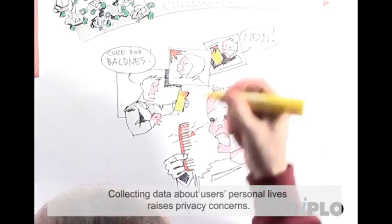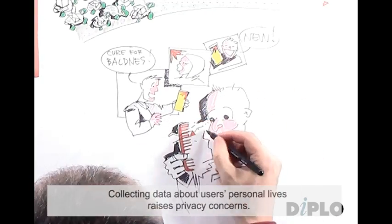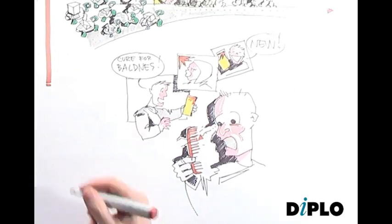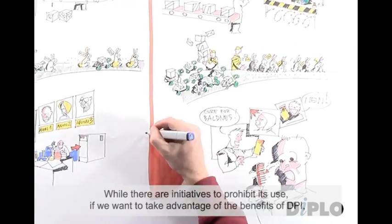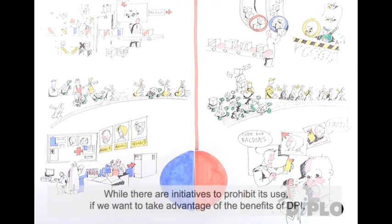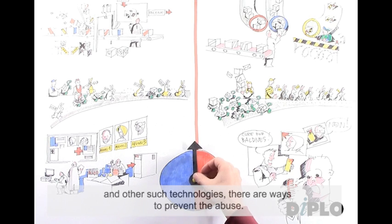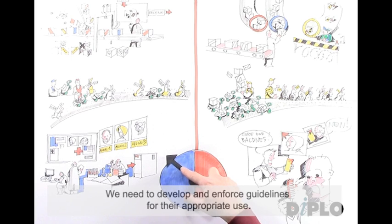Collecting data about users' personal lives raises privacy concerns. While there are initiatives to prohibit its use, if we want to take advantage of the benefits of DPI and other such technologies, there are ways to prevent the abuse. We need to develop and enforce guidelines for their appropriate use.